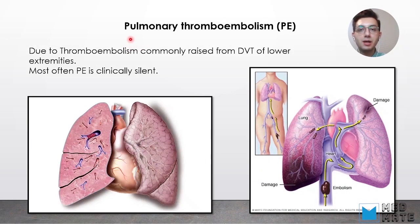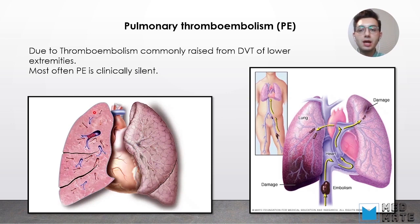Another form is pulmonary thromboembolism, commonly arising from deep vein thrombosis of the lower extremities, which then moves into the lungs. Most often, PE is clinically silent, because the lungs have two blood supplies and the other supply remains intact. The common sign of PE is wedge-shaped necrosis — when one branch is plugged, that entire area stops receiving blood, undergoes ischemia, and causes wedge-shaped damage.